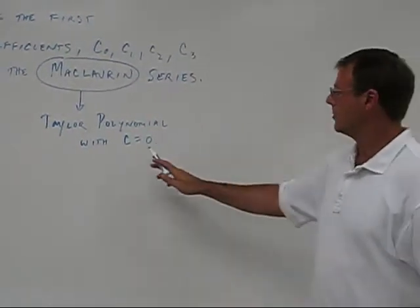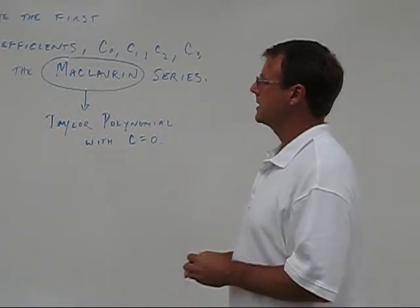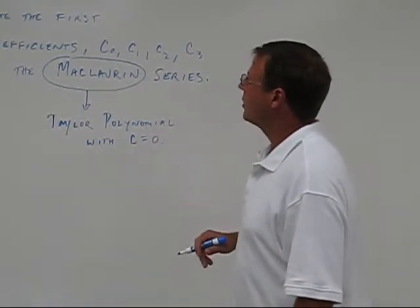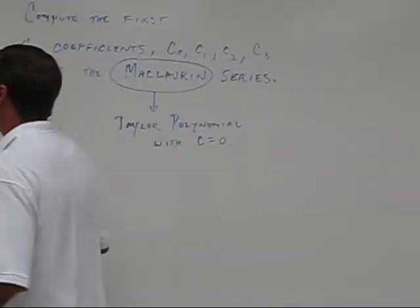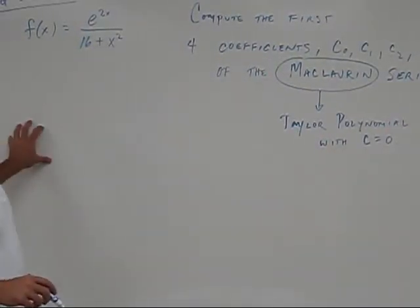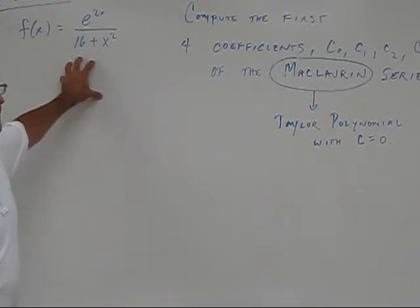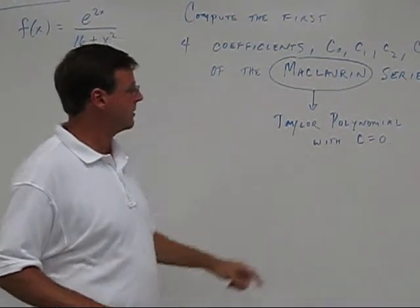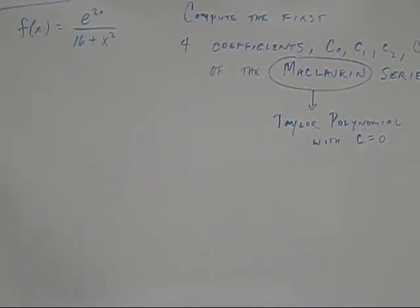So this is the point that we're going to plug in, c equals 0. So normally when you're asked to find a Taylor polynomial, you're going to start taking derivatives and then plug in the particular value, c equals 0 in this case. And you can go ahead and try that.